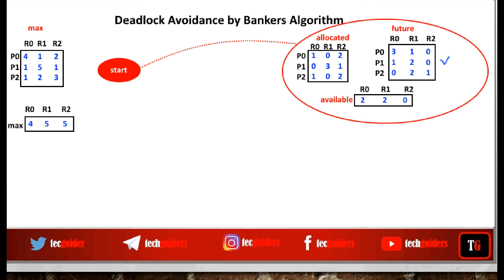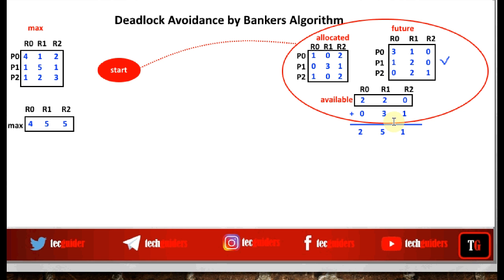Can we execute P1? One is less than two, two equals two, zero equals zero — yes, we can execute P1. When P1 completes execution, the available resources will increase: 2,2,0 plus 0,3,1, because the resources granted and the resources previously held by it will all be released once P1 completes execution. So the available resources now become 2,5,1.